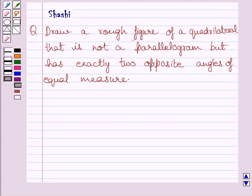Hi and welcome to the session. Let us discuss the following question. Question says, draw a rough figure of a quadrilateral that is not a parallelogram but has exactly two opposite angles of equal measure.